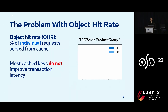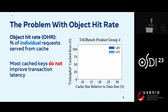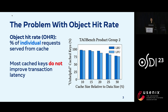To see this, we'll show results from the TauBench product group 2 workload. TauBench is an open source benchmark for meta replicating its social graph requests. We'll show results from two popular caching algorithms, LRU and LFU, over a range of different cache sizes, showing the percentage of unhelpful cache keys. In some cases, up to over 95% of these keys aren't actually helping overall transaction latency, indicating that object hit rate is the wrong metric for transactions and that there's significant room for improvement.